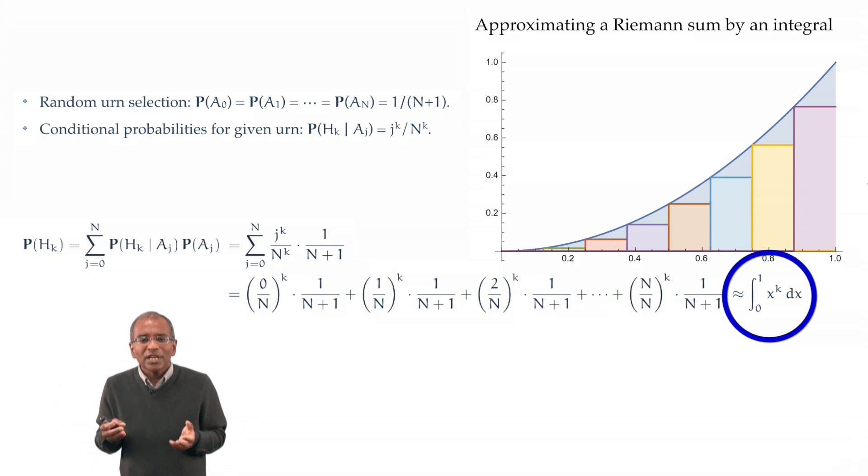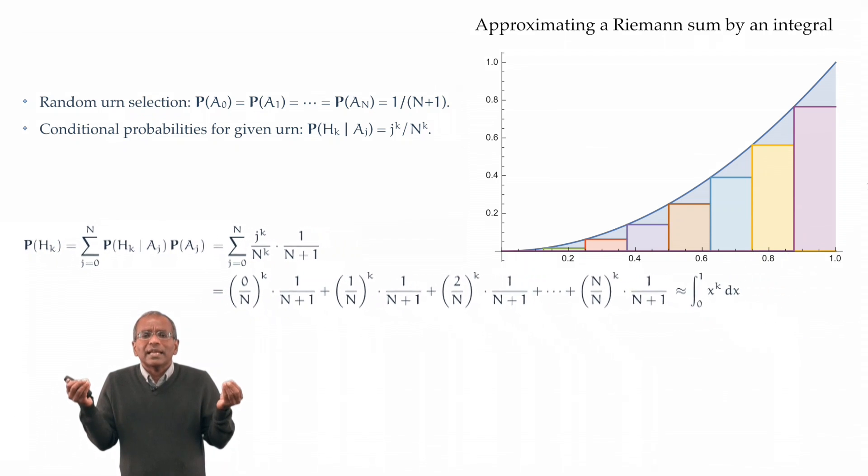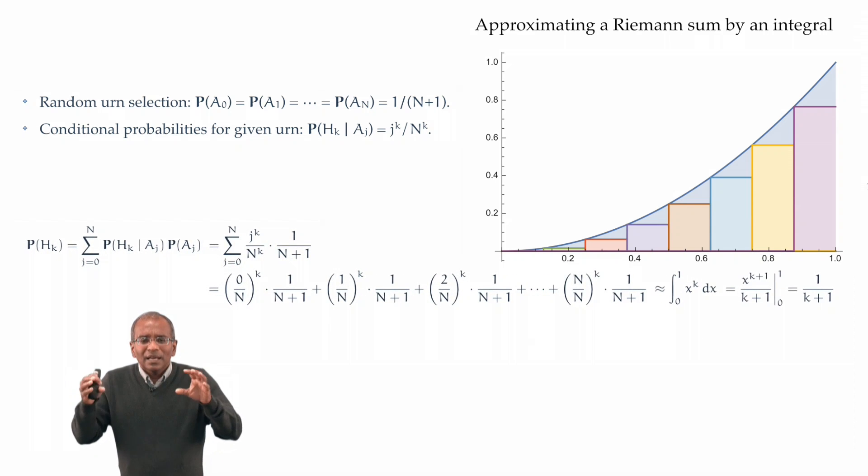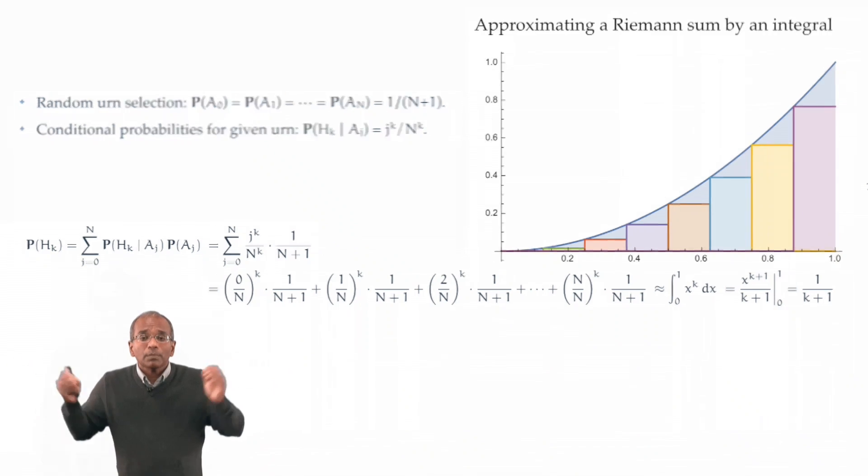But of course, this is a completely elementary integral. And we evaluate it, and we find that the answer is beguiling in its simplicity. Under this probability model for repeated selections of balls from a random urn, the chance that k red balls are drawn in a row is approximately 1 over k plus 1. And the approximation gets tighter and tighter, the larger n becomes.